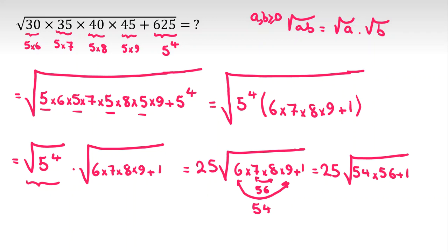Now I can say, when I have two numbers that the difference between them is 2, I can write it as 55 minus 1, and this one is 55 plus 1.